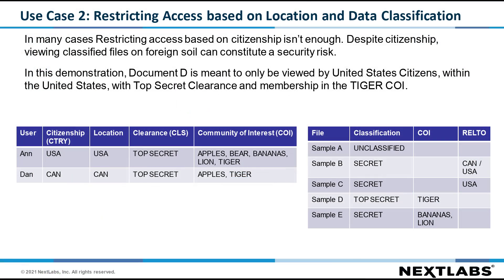In many cases, restricting access based on citizenship isn't enough. Despite citizenship, viewing classified files on foreign soil can constitute a security risk. In this demonstration, document D is only meant to be viewed by United States citizens within the United States with top secret clearance and membership in the Tiger COI.